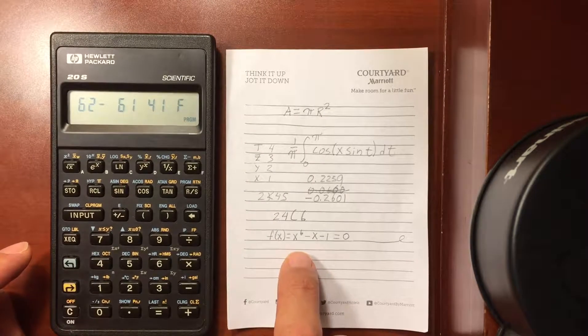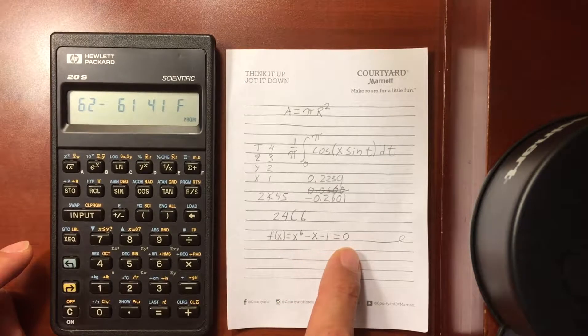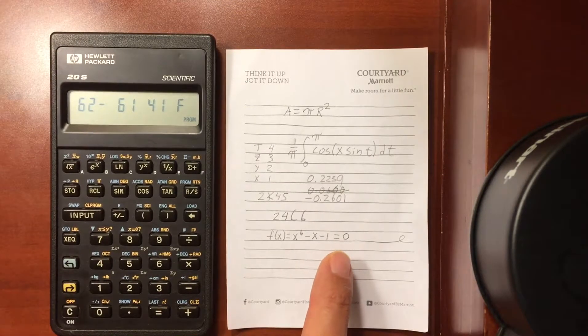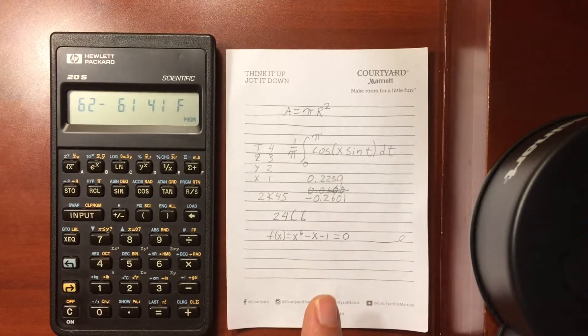The function I've picked is out of the manual. It is x to the sixth minus x minus 1, and we want to find the roots of this. There are two roots: one root is at negative 0.78 and the other root is at 1.13.